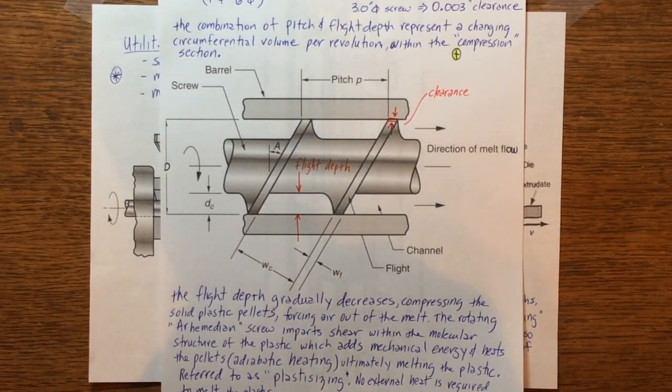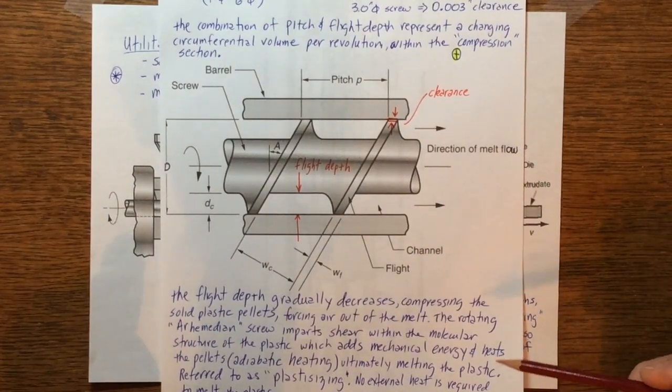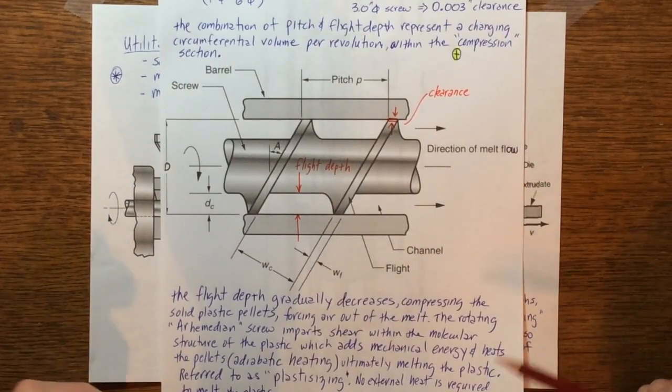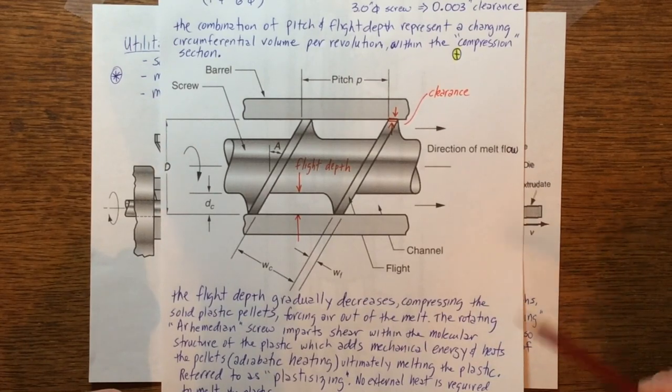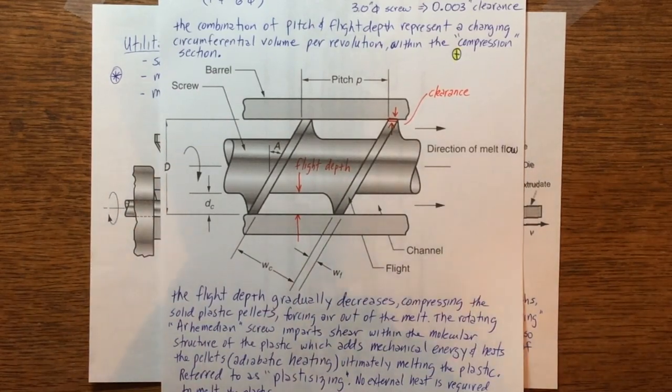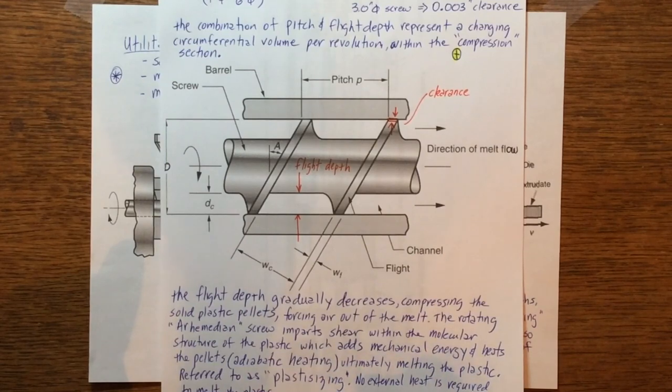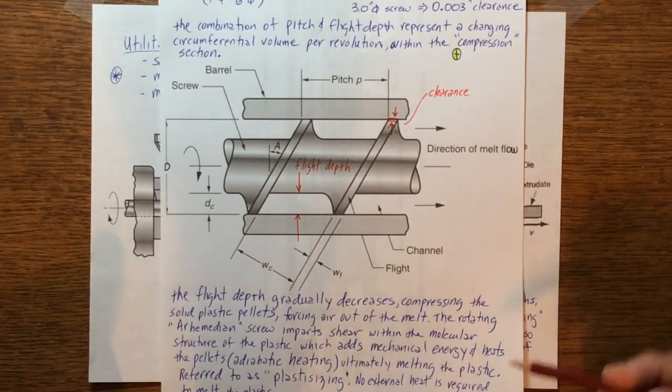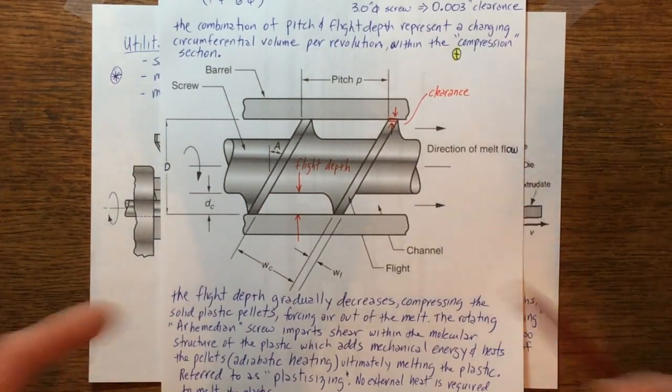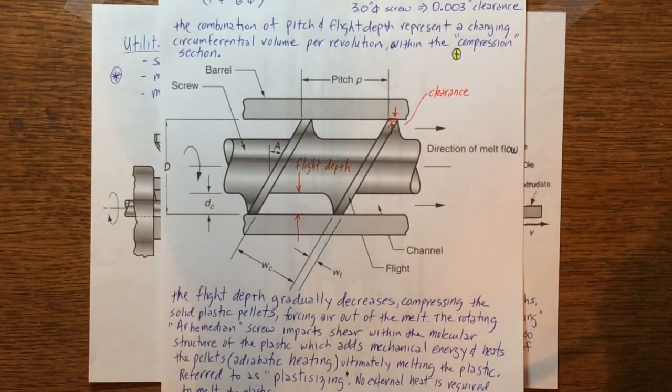But it's the rotating of this essentially Archimedean type screw that forces these from a molecular level, forces these molecules, these polymer molecules to shear across one another, which obviously has a certain amount of mechanical energy and heat.